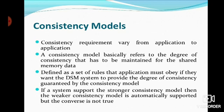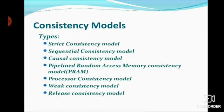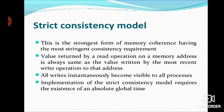Consistency requirements vary from application to application. There are different types of consistency models. The first model is the strict consistency model. This is the strongest form of memory coherence, having the most stringent consistency requirement. The value read by a read operation on a memory address is always the same as the value written by the most recent write operation to that address. All writes instantaneously become visible to all processes.